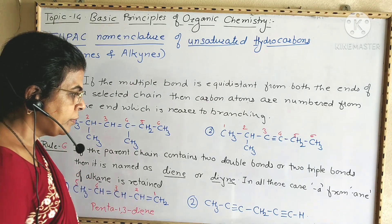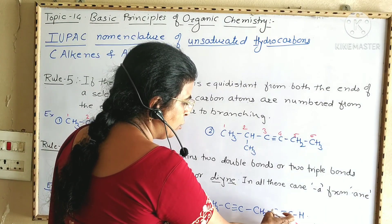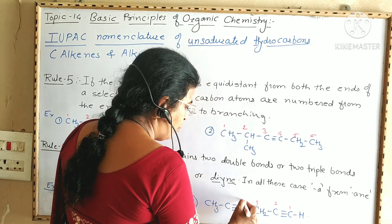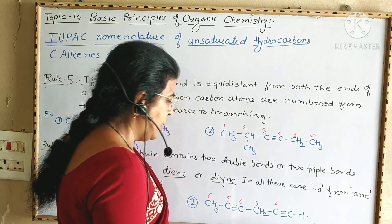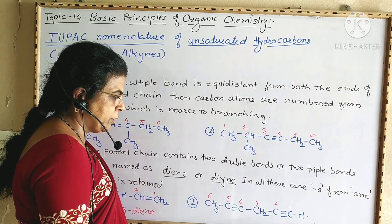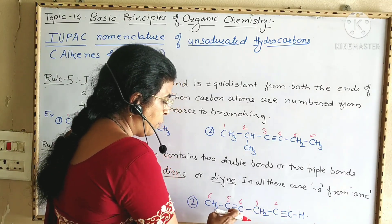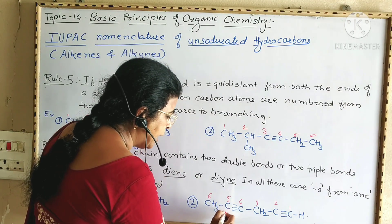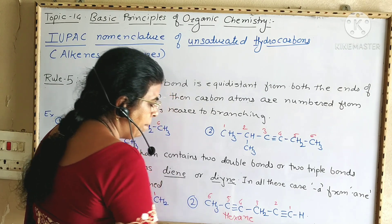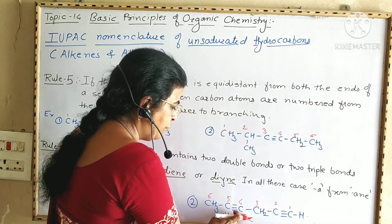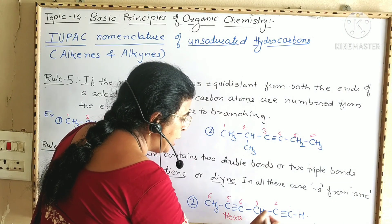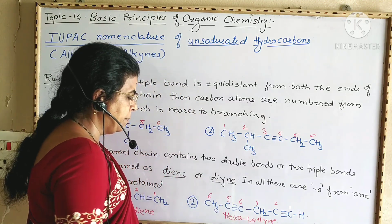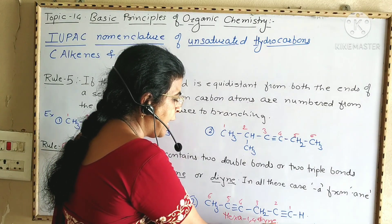In the second example for rule six, there are six carbon atoms and two triple bonds. The end nearer to a triple bond is chosen for numbering: one, two, three, four, five, six. The two triple bonds are at carbon one and carbon four. Parent alkane is hexane, and since there are two triple bonds, the name becomes hexa-1,4-diyne.